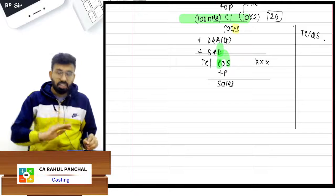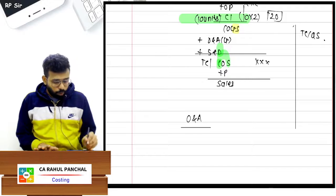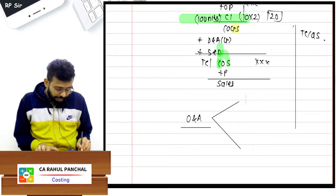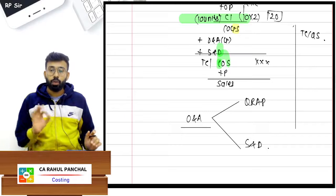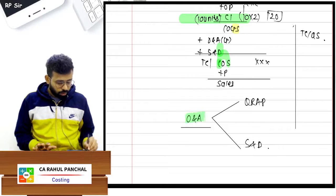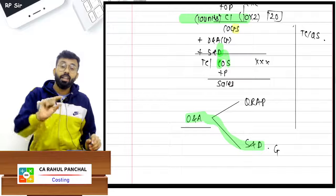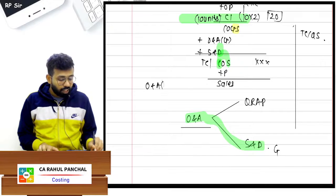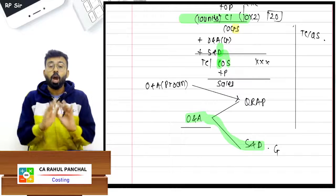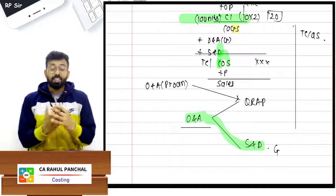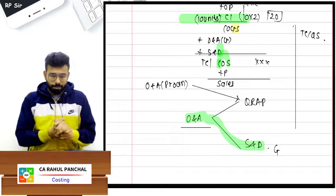One more thing: suppose in the question nothing is specified — only 'office and administration' is written. In the absence of information, it will go to selling and distribution as general administration overhead. Only if it is specifically written in brackets that office and admin is connected with production activity, then only it will be written in QRAP. This much revision is sufficient. Whatever we have done in the previous lecture has been discussed. Now we can start with our questions.